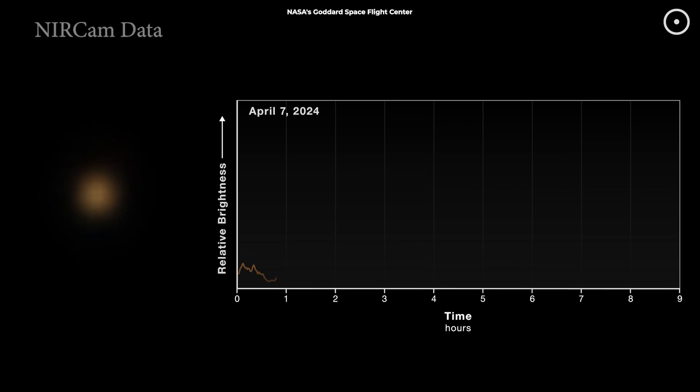First, we have what scientists call the quick flickers. Think of them like cosmic camera flashes. These last for just seconds, popping up randomly like sparks from a campfire. They're the smallest of the bunch, but they're happening constantly.